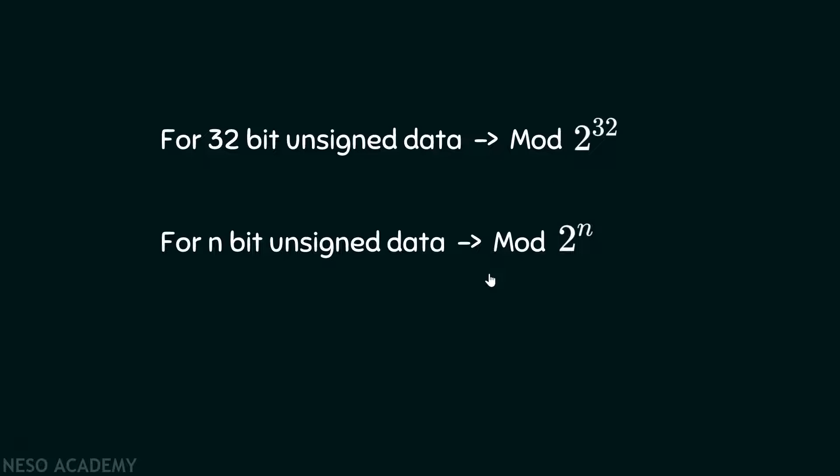Now let's talk about the signed range. Signed range is a little different, but the idea is the same. Let's again take an example of 3-bit data. For a 3-bit signed data, the range would be minus 4 to plus 3 according to 2's complement representation. Now it's quite easy to represent the number in 2's complement and see what happens when we try to exceed the range.